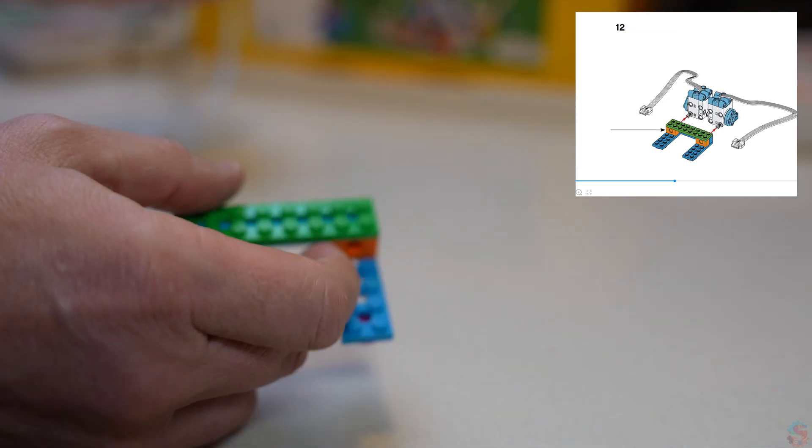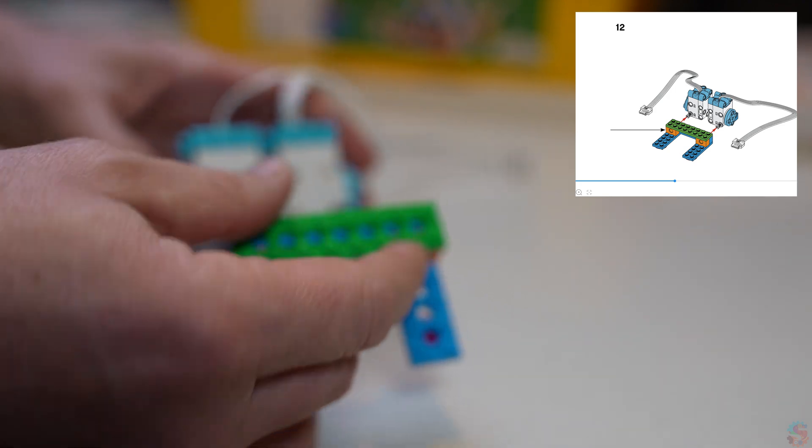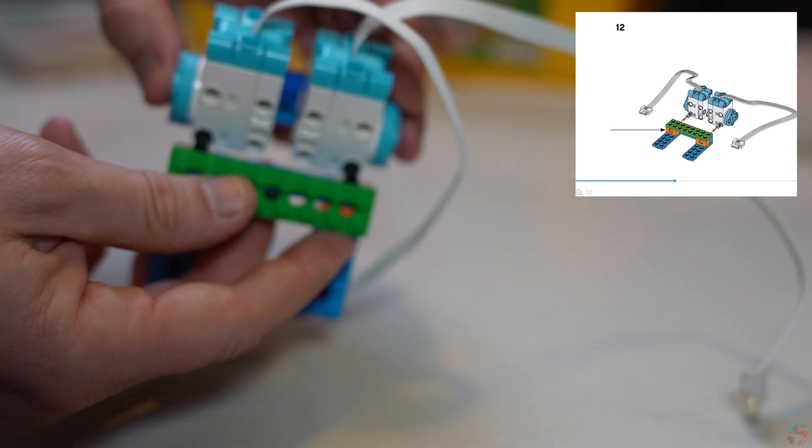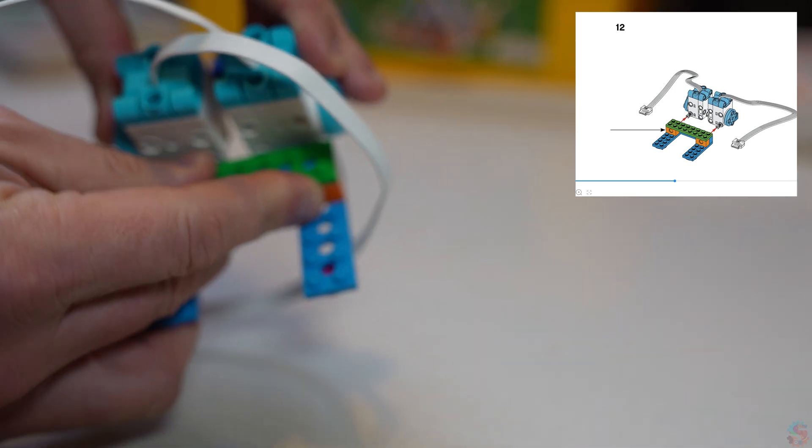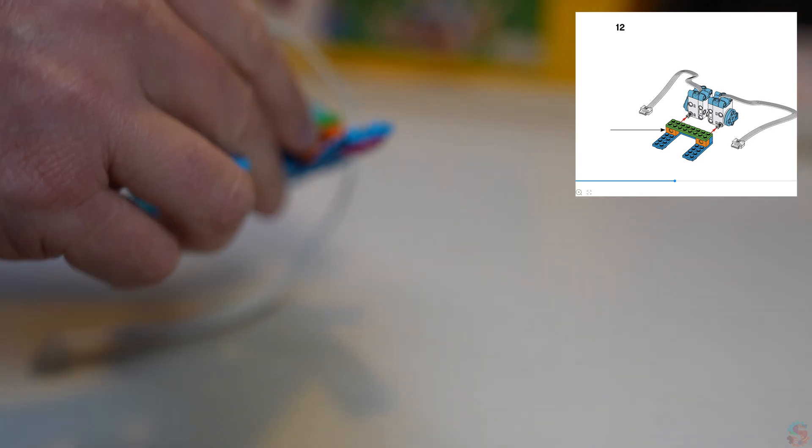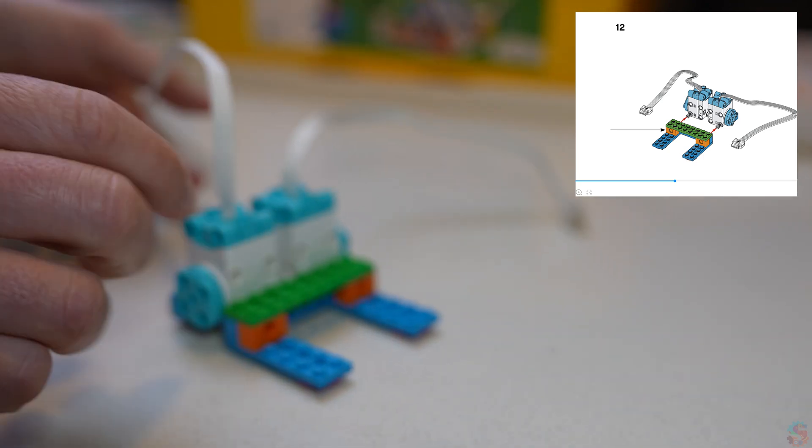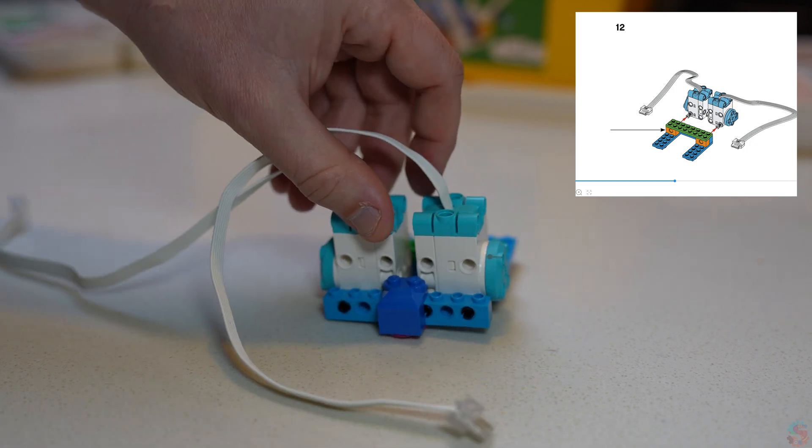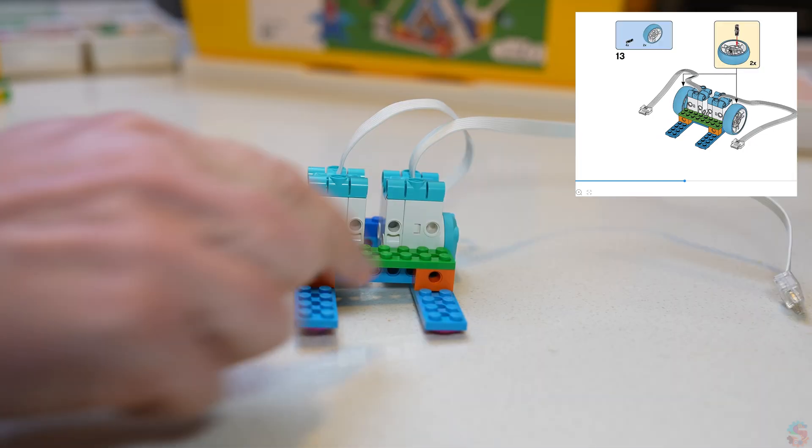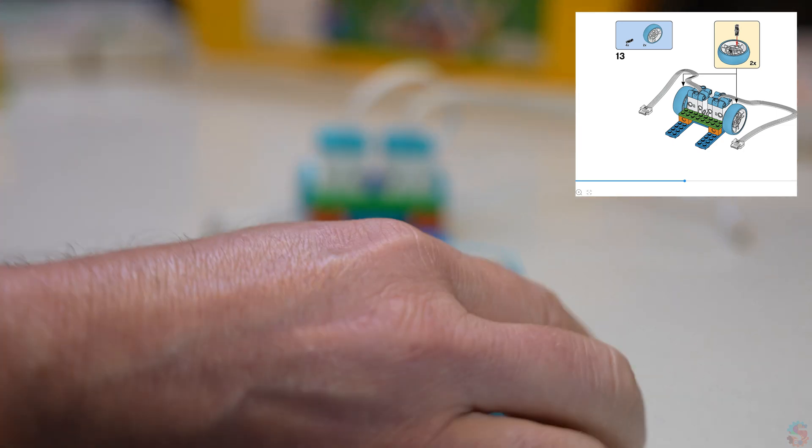Now into that blue beam is going to go the back side of our motors, where we just put those black pins, and it'll look just like that. One side has that blue piece that's sloping, the other side has these two legs, and on the very bottom we have three of those purple pieces.